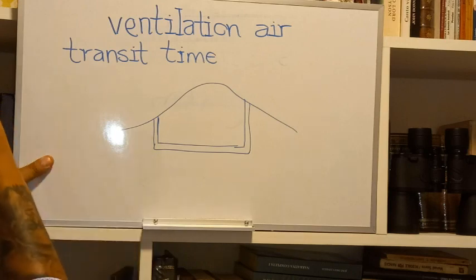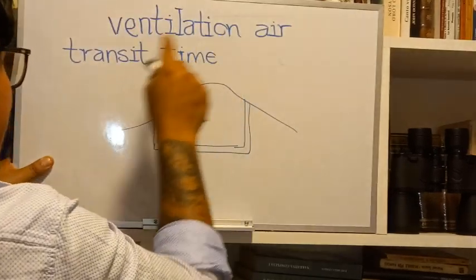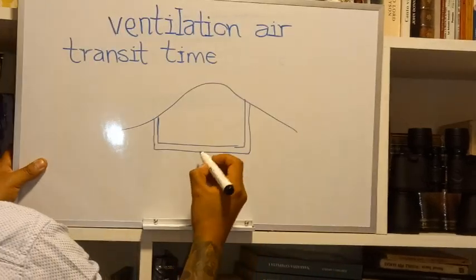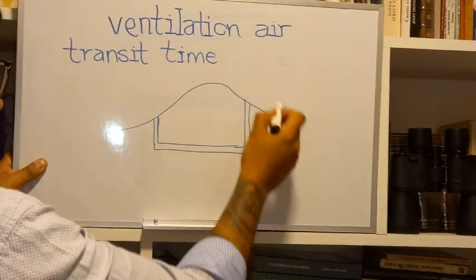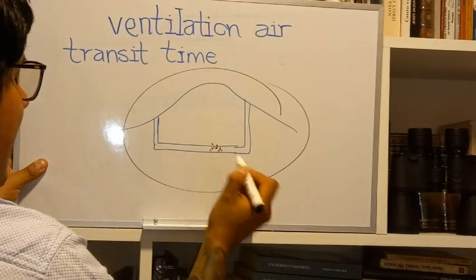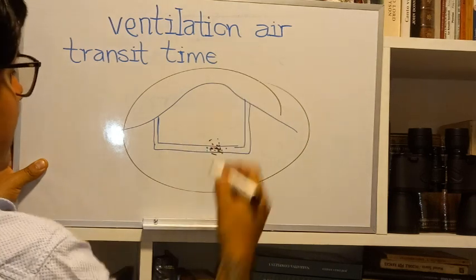First, you have to consider the ventilation air transit time. What is air transit time? It's the period that the radon gas stays underground. Suppose this is the radon gas accumulating itself until it reaches high concentrations.